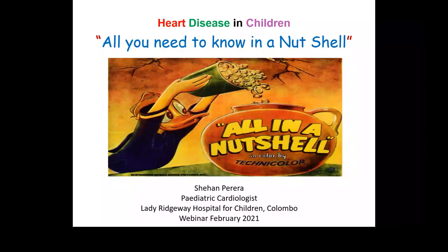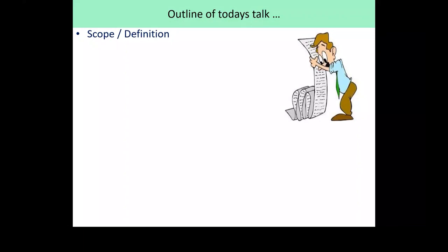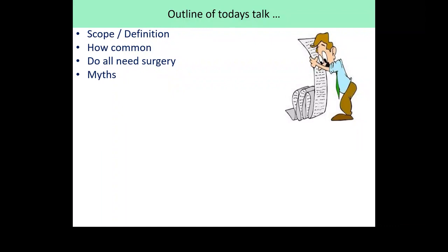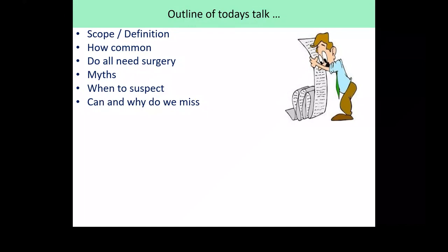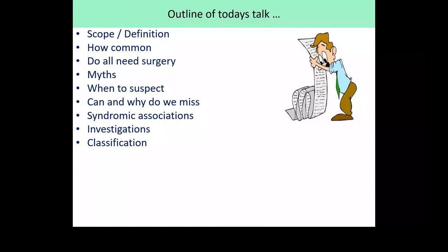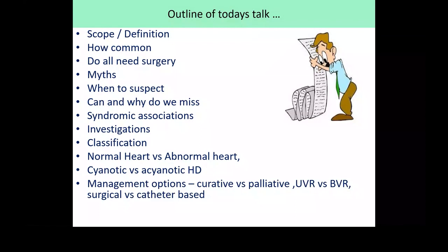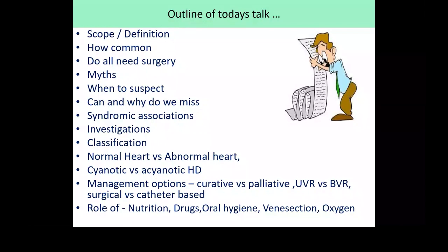The outline of today's talk will be: the scope and definition of heart disease in children, how common it is, do all of them need surgery, what are the myths, when should you suspect heart disease, can and why do we miss them, syndromic associations, investigations, classification, normal versus abnormal heart, cyanotic versus acyanotic heart, management options including curative and palliative, univentricular versus biventricular repair, surgical versus catheter-based management, and the role of nutrition, drugs, oral hygiene, venous action, and use of oxygen in these babies and children.